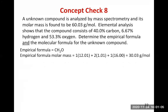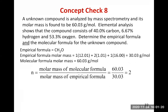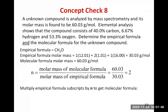Now that we have the empirical formula molar mass, and the molecular formula molar mass is given as 60.03 grams per mole, we use n equals the molar mass of the molecular formula over the molar mass of the empirical formula: 60.03 divided by 30.03 gives n equals 2. Multiplying the empirical formula subscripts by 2, CH₂O × 2 gives C₂H₄O₂ — the molecular formula of our compound.